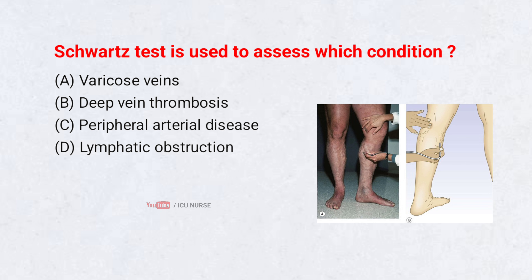Schwartz's test is used to assess which condition? A. Varicose veins. B. Deep vein thrombosis. C. Peripheral arterial disease. D. Lymphatic obstruction. Correct answer: A.